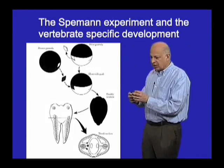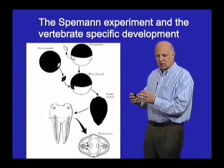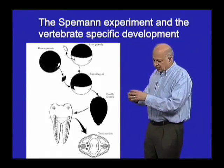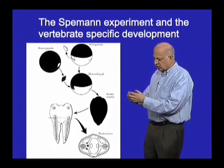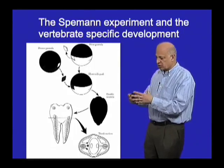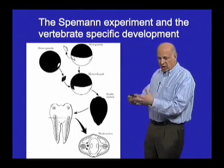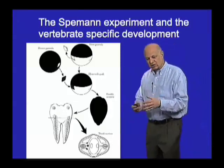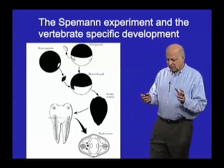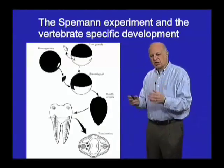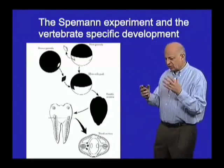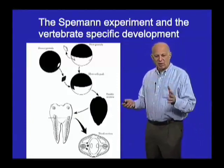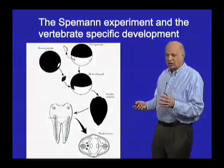This signaling tissue gives rise to the notochord. The notochord contains signaling elements, but it also is an anatomical structure that derives from that tissue. Since the notochord is the iconic structure of a vertebrate, we want to know where it came from and how it arose.